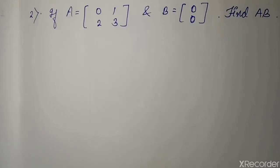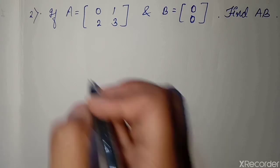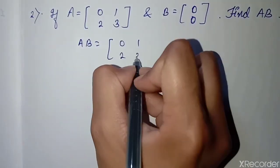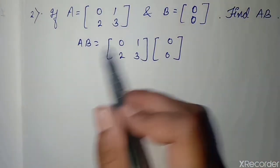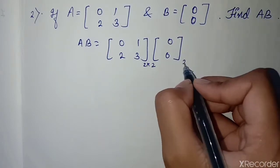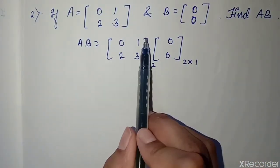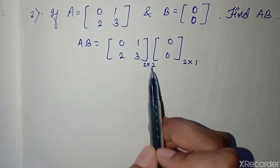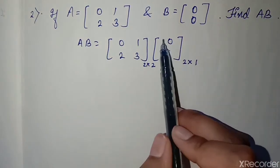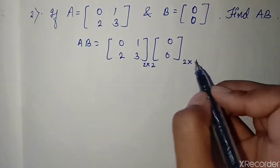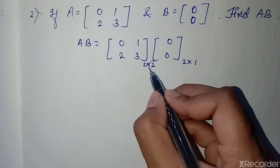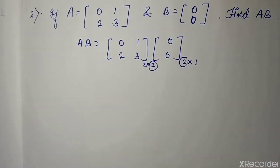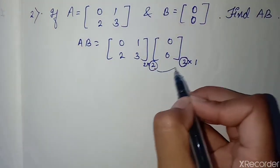In the next question, A equals a given matrix and B equals a given matrix. We have to find AB, which means we multiply both matrices. First we check the order of both matrices. The first matrix is 2 into 2 order (2 rows and 2 columns), and the second matrix is 2 into 1 order (2 rows and 1 column). For multiplication, the number of columns in the first matrix must equal the number of rows in the second — here they are the same, so multiplication is possible.